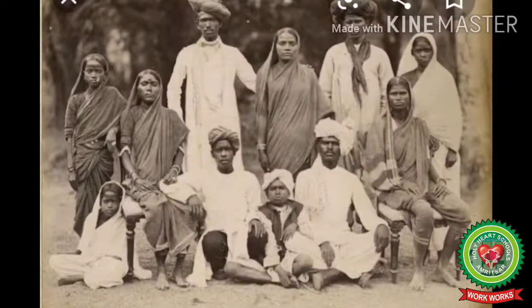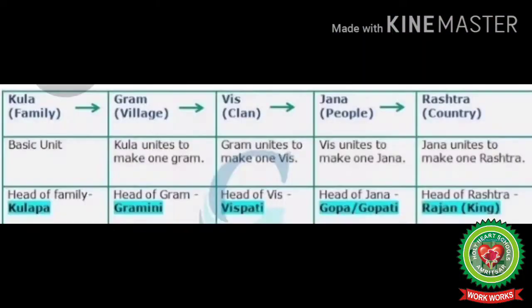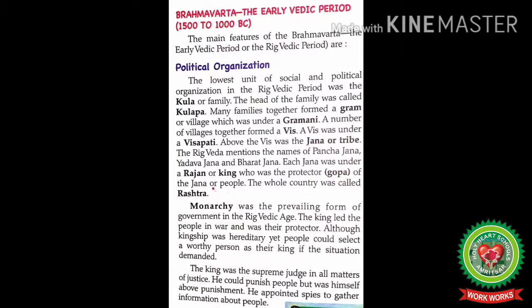To summarize: in the Rig Vedic period, the lowest unit of social and political organization was the family, known as the Kul, headed by the Kulpati. Families united to make a village, also known as Gram, headed by the Gramani. Many Grams together formed a Vis, headed by the Vispati. The Vis came under the Jan, or tribe, whose head was the Rajan or king, whose duty was to protect the people. The whole country was known as Rashtra. The Rig Veda mentioned three tribes: Panch Jan, Yadav Jan, and Bharat Jan.